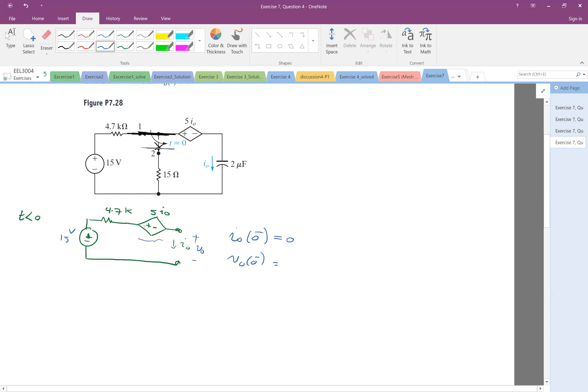So I0 is 0. So this dependent source, the voltage of that is 5 times 0, so that would be 0 here. And because the current here is 0, there's 0 here. And there's no current here, there's also 0. So all of them are 0. So you have only 15 volts here, so all the 15 volts will be here. So 15.